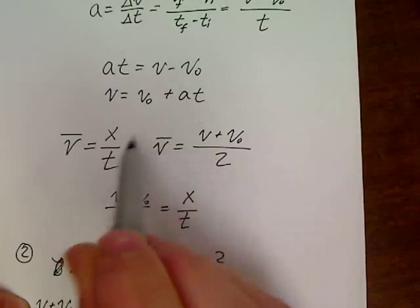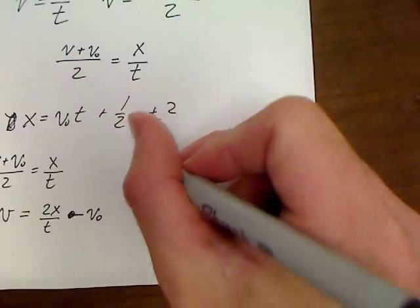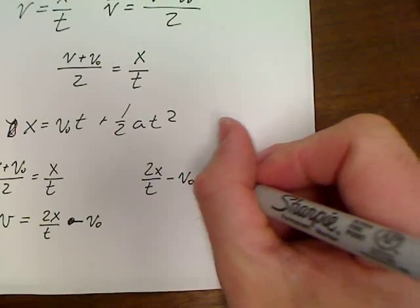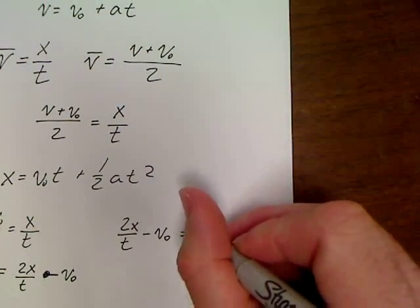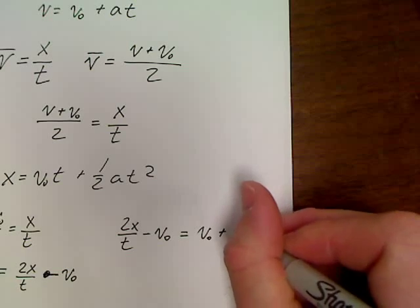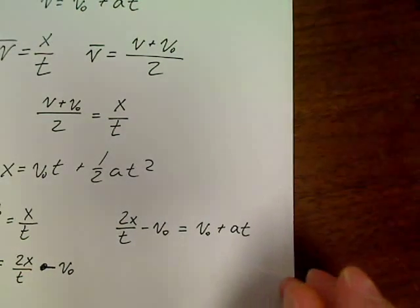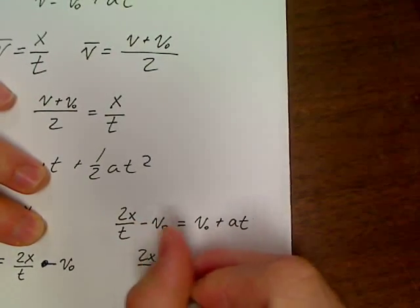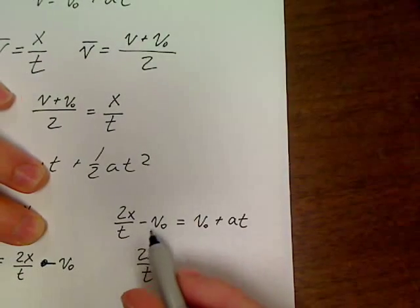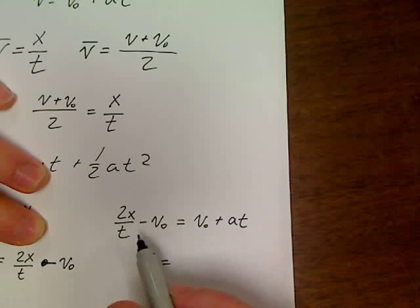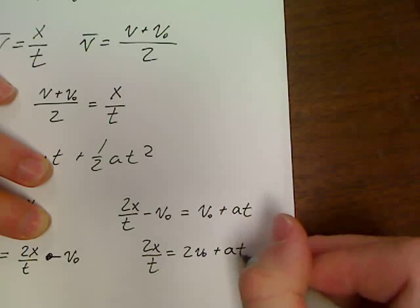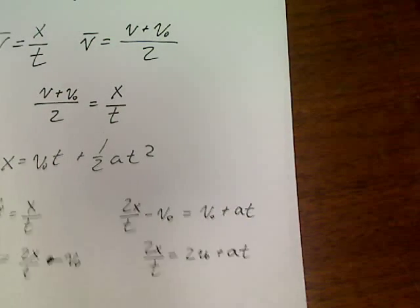Now substitute that back into the first. And we have 2x over t minus vo equals vo plus at. Start doing a little bit more here. And we've got 2x over t equals negative vo here, plus the vo here, so bring that over. That would be equal to 2vo plus at.